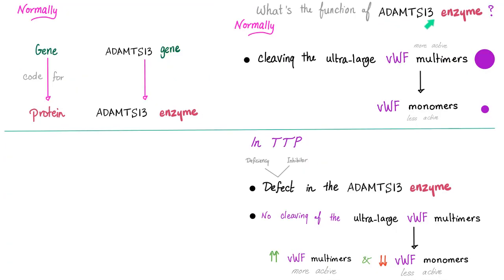What in the world is the ADAMTS13 enzyme? First, to understand the disease we need to understand normal physiology. Normally, a gene codes for a protein. The ADAMTS13 gene codes for the ADAMTS13 protein, which is an enzyme because all enzymes are proteins. The function of ADAMTS13 is to cleave the ultra-large von Willebrand factor multimers, which are big, hyperactive particles, and break them down into von Willebrand factor monomers — smaller, less active, and more desirable.